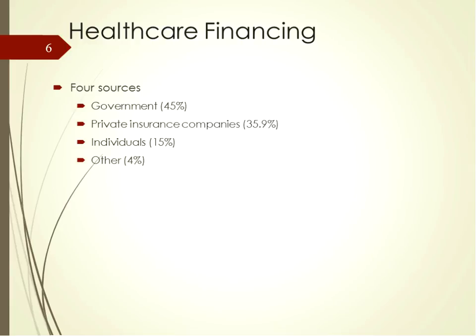The four key sources for healthcare financing are government, private insurance companies, individuals, and others. The government, primarily through Medicare and Medicaid programs, pays the most as a single source. Private insurance companies, while paying more of the overall percentage, are composed of numerous individual businesses. Almost 75% of the government's spending is at the federal level. Because the government pays such a large percentage, you can see how the Centers for Medicare and Medicaid greatly influence what happens in healthcare.